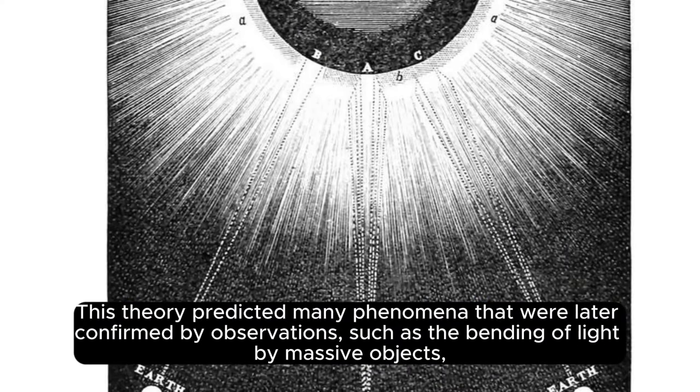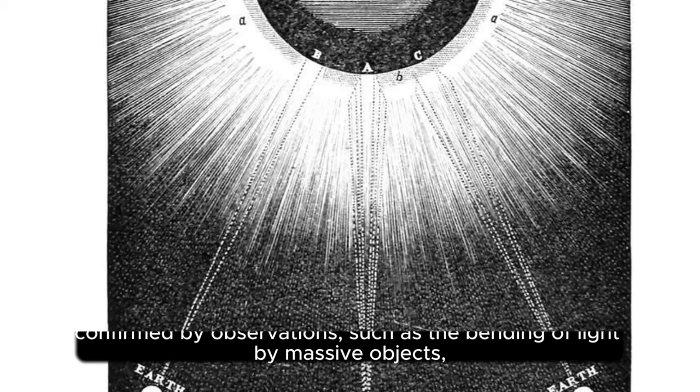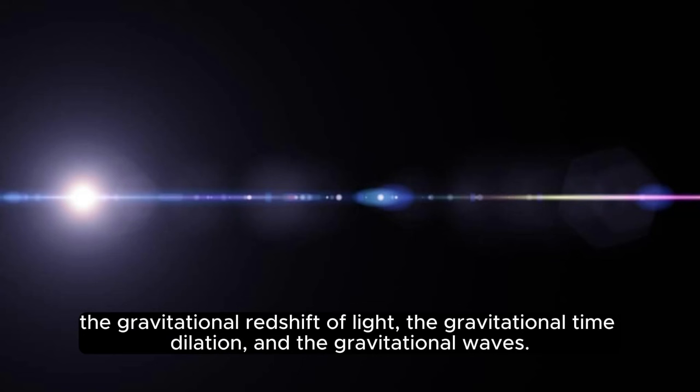This theory predicted many phenomena that were later confirmed by observations, such as the bending of light by massive objects, the gravitational redshift of light, the gravitational time dilation, and the gravitational waves.